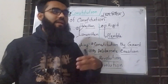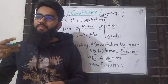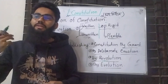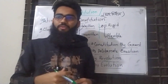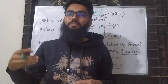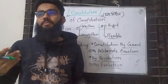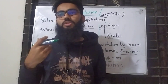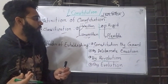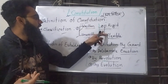So the constitution is established in four ways. The first is by grant. The second is by convention or constituent assembly. The third is by revolution. And the fourth is by evolution. These are the four classifications by method of establishment. We will continue with further information in the next part.